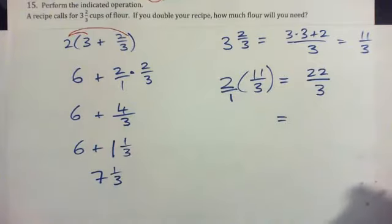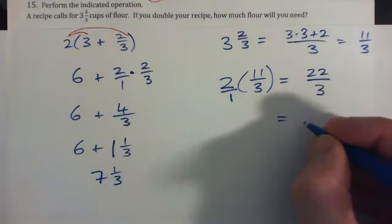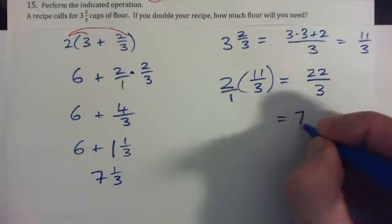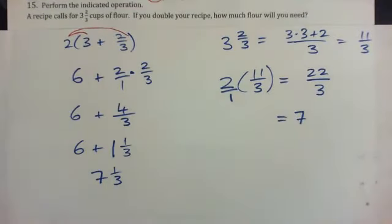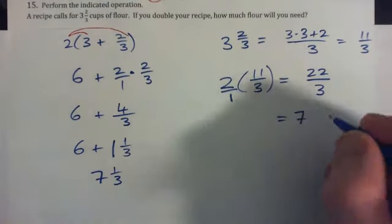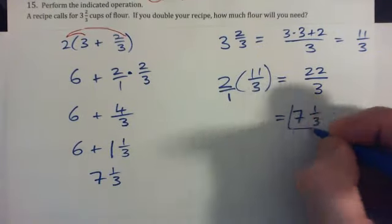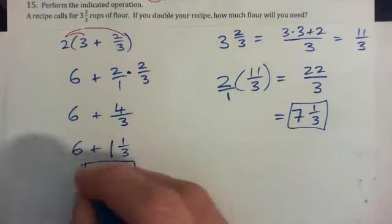Which gives what? Three into twenty-two goes seven times, remainder one, seven and one-third. So either way, the answer would be seven and one-third.